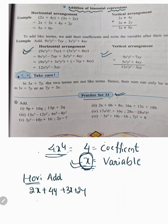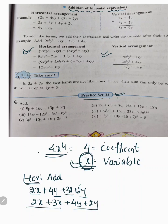In horizontal addition, we group like terms side by side: take 2x plus 3x together, then take the other variable y. Here y is the variable and 2 is the coefficient. Then we group the other variable terms together. This is horizontal addition.